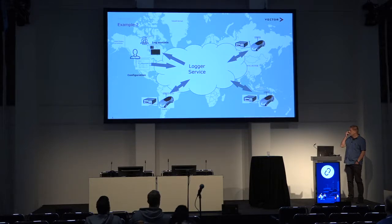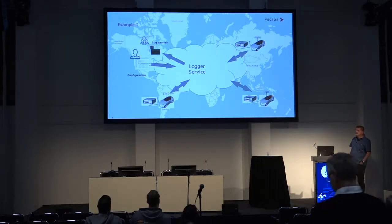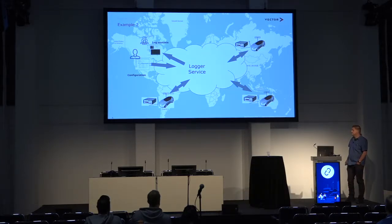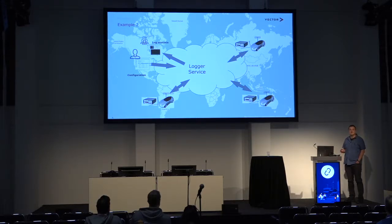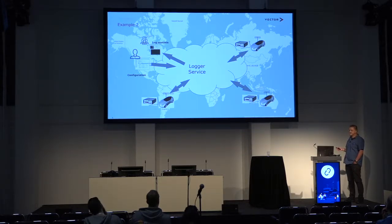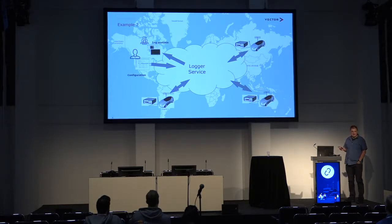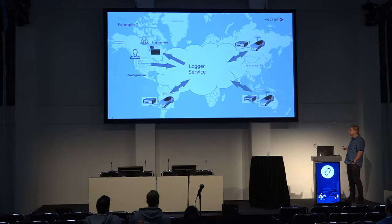Another example is the logger service, mainly used during car development of new models, where logger devices are mounted in cars, connected to the vehicle network, and just logging events. As the amount of ECUs in the car is increasing, the amount of testing required is also increasing while the time available is not. The testing fleet becomes an important economic factor and returning each car to the factory for log analysis is not feasible. Our logger service allows putting logger configuration in the cloud for individual cars to pick up, and in the other direction, whenever they have mobile connectivity, cars upload logs for the factory to download and analyze.